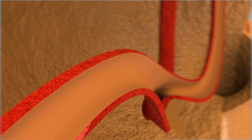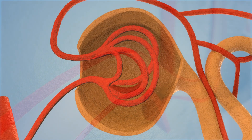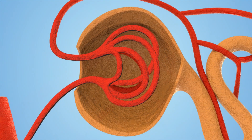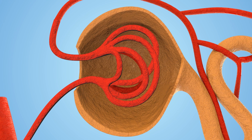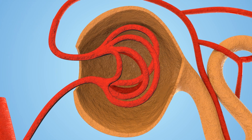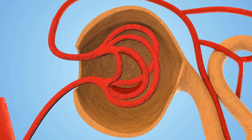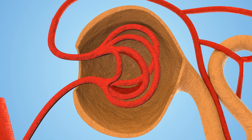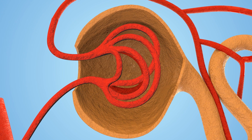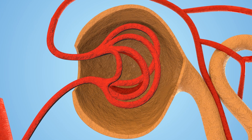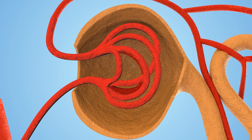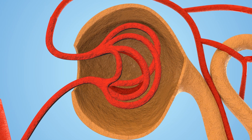This is a magnified view of the glomerulus, the filter of the kidney. As the afferent arterial wall thickens, the blood flow to the kidney decreases. Without adequate blood flow, the glomerulus shrinks and starts filtering less.